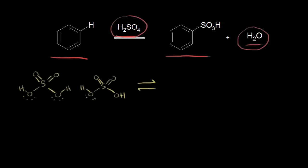Let's take a look at the mechanism to put an SO₃H group onto our benzene ring. Here I have two molecules of sulfuric acid. One of these molecules is going to function as an acid and donate a proton, and one is going to function as a base and accept a proton. If this lone pair of electrons accepts that proton, that would leave these electrons behind onto that oxygen. Let's go ahead and show the result of that acid-base reaction.